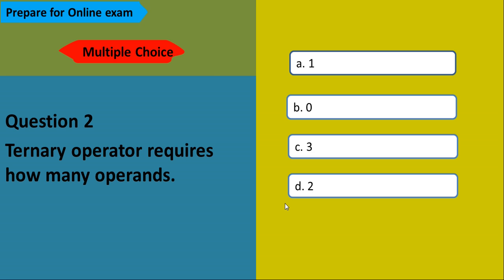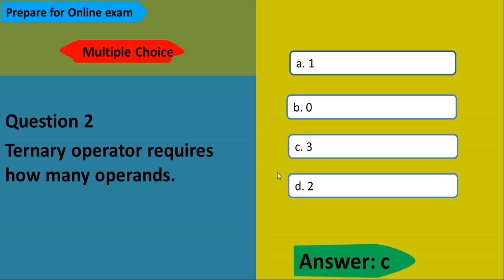Question number two: The ternary operator requires how many operands? A unary operator requires one operand, a binary operator requires two operands, and a ternary operator requires three operands. So the answer is three.